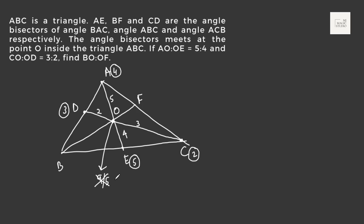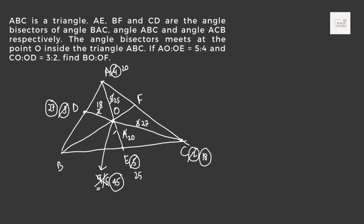We multiply to make the common fulcrum value 45. The ratio 5:4 needs to be multiplied by 5 — so A becomes 20 and E becomes 25. On line DC, multiplying by 9 — D becomes 18 and C becomes 27. The mass ratio becomes 27 and 18. Now 25 + 20 = 45 and 27 + 18 = 45. These two lines are now in balancing position.